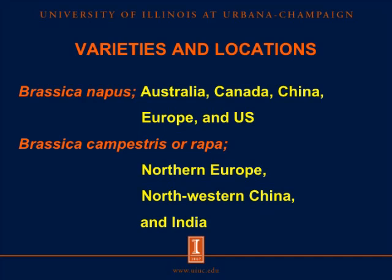For variety and location of canola and rapeseed, there are two different varieties grown in different regions around the world. Brassica napus can grow in Australia, Canada, China, Europe, and the US. Brassica campestris or rapa can grow in Northern Europe, Northwestern China, and India.